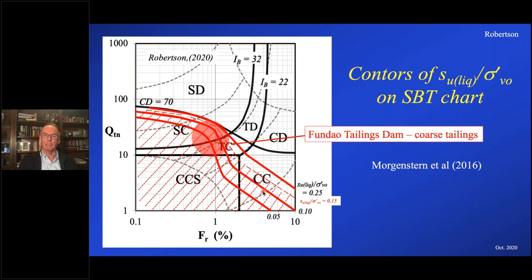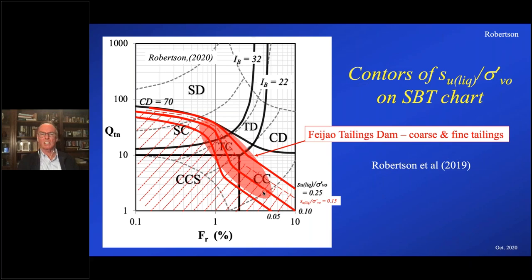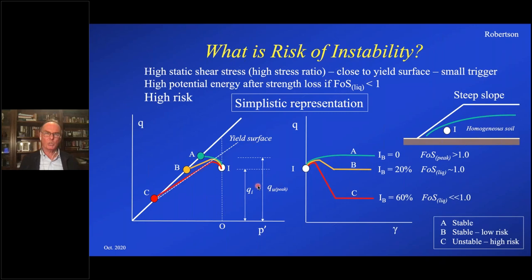Looking at the case histories: here are the Class A cases and you see they all tend to fit in that region. Adding the more recent ones — here's the Fundão tailings dam from the Morgenstern et al. expert panel report: it plots in the more sand-like region because they were looking at the coarse tailings as the driver. Then here's the Feijão dam, where there were two different tailings: a coarse sand that plotted mostly in the sand-like contractive region, and fine tailings that tended to plot in the clay-like contractive region. In the fine tailings, it was an undrained penetration — large excess pore pressures during the CPT with T50 values of around 60 seconds, confirming it was an undrained penetration.